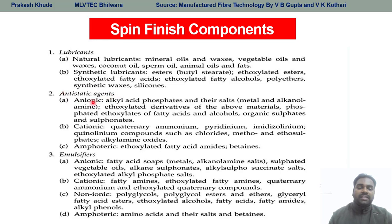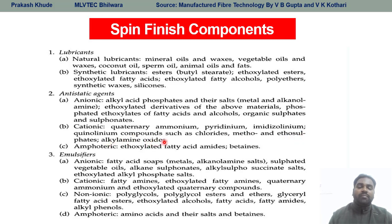In terms of antistatic agents, these could be ionic, cationic, and amphoteric types. For ionic antistatic agents, for example, we have alkyl acid phosphate and their salts. For cationic agents, we have quaternary ammonium compounds, pyridinium compounds, and different compounds such as methosulfate and alkyl amine oxide.